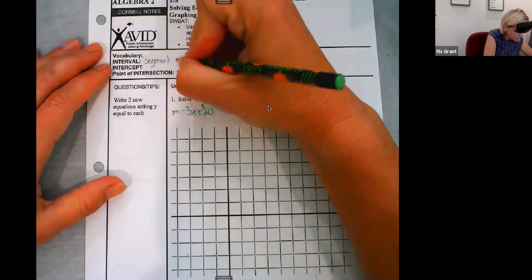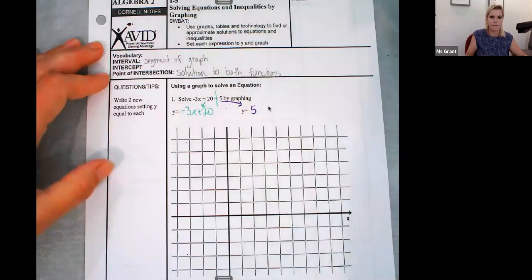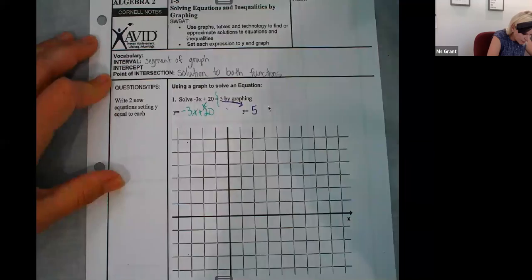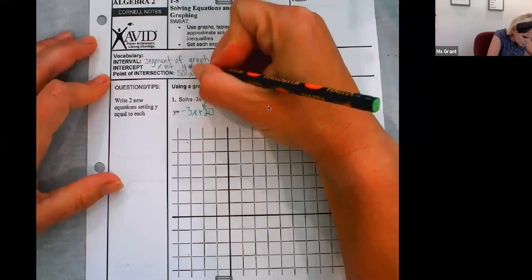An interval is a segment of the graph. An intercept we know that it's either like the x-intercept or the y-intercept.